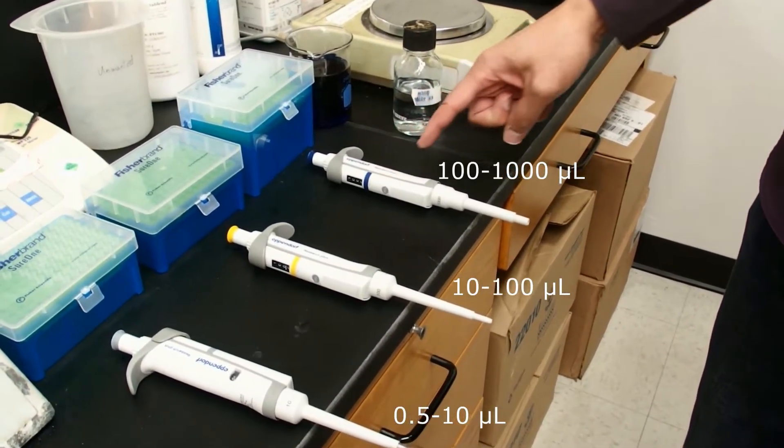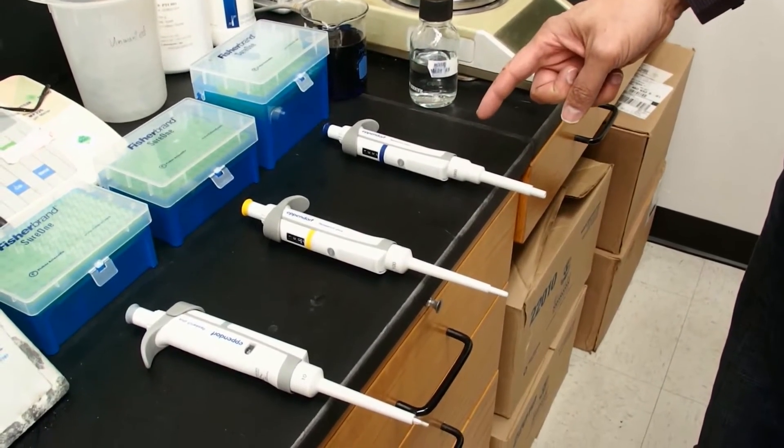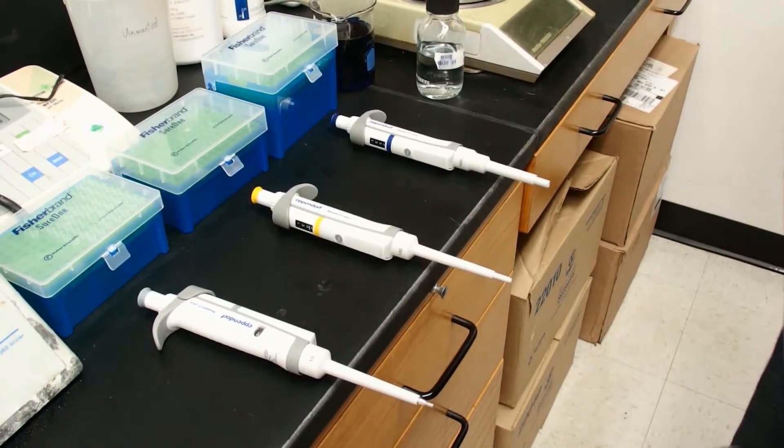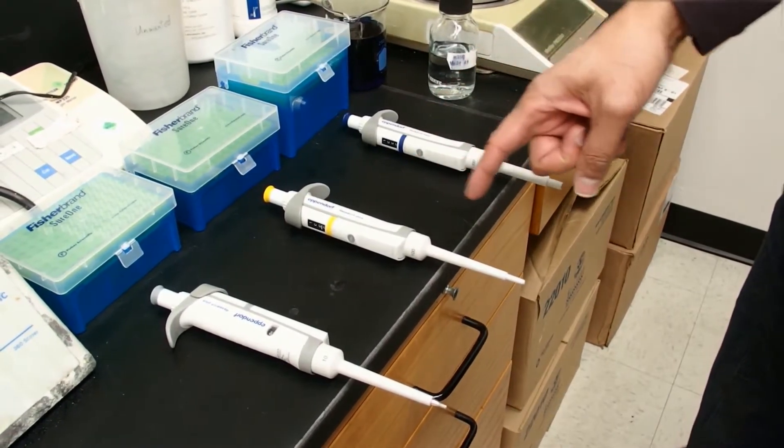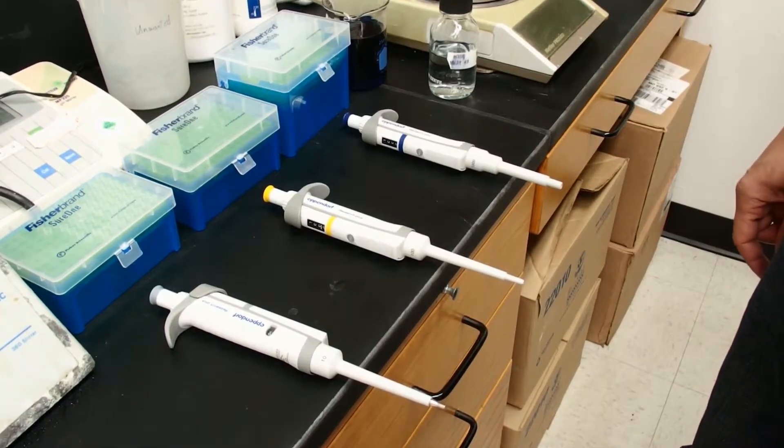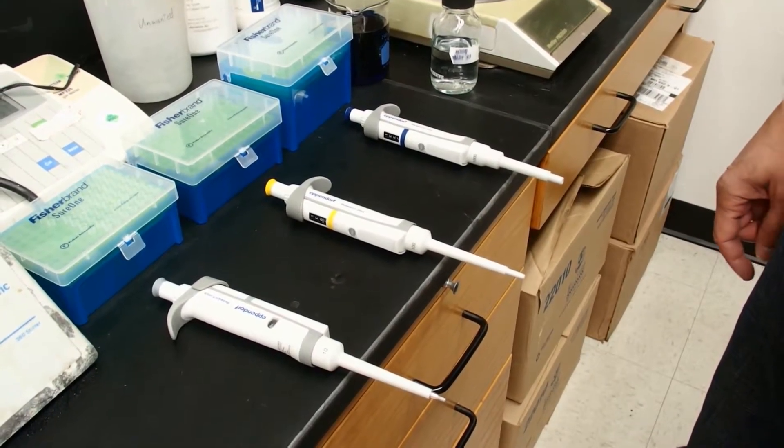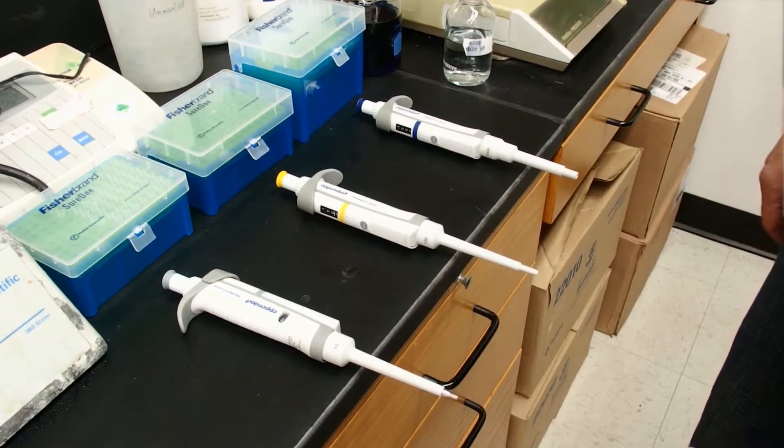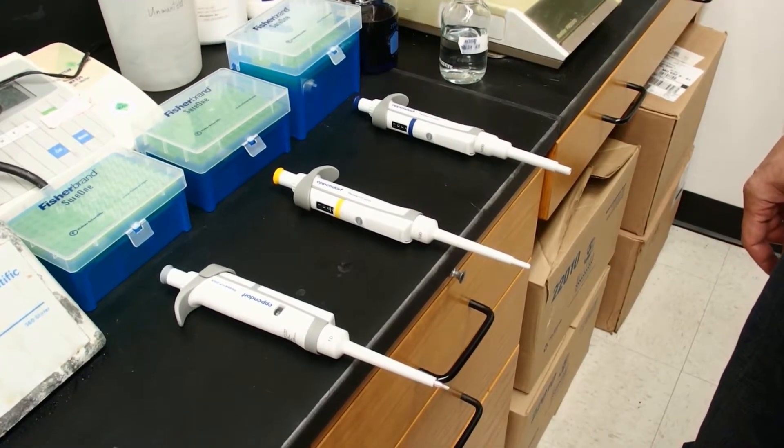Here we have a set of three different Eppendorf micropipettes that each pipette a different volume range. The P1000 pipettes between 1,000 microliters and 100 microliters. The P100 pipettes between 100 and 10 microliters. And the P10 pipettes between half a microliter and 10 microliters.